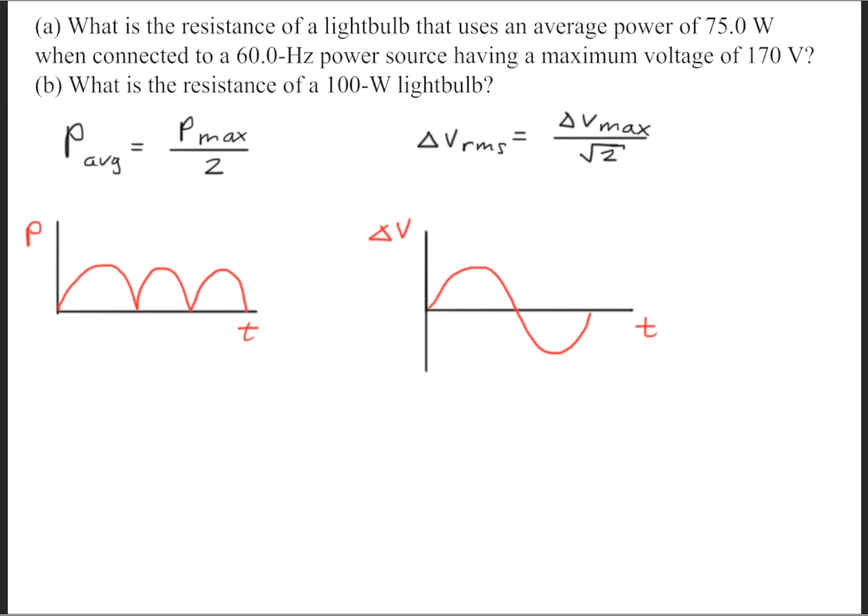The reason we're using these two formulas is because we're using an alternating current. When we use an alternating current, the graphs will look a little something like these. We're interested in the average of these graphs.